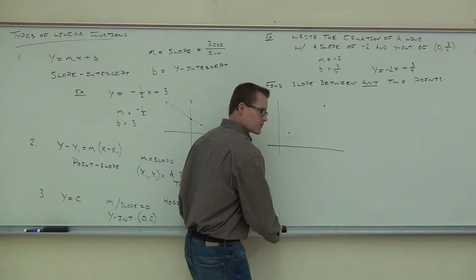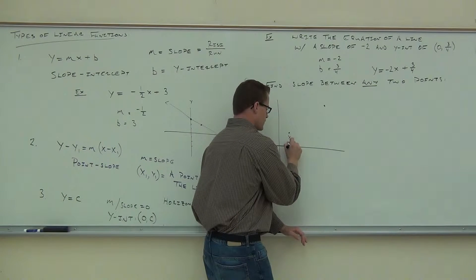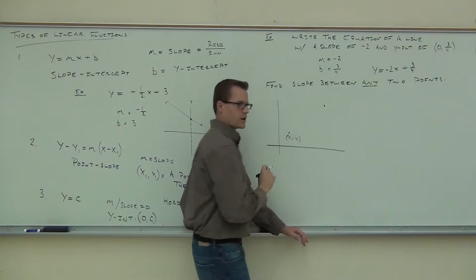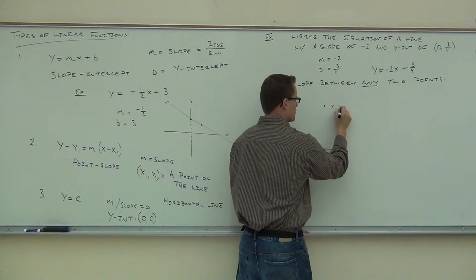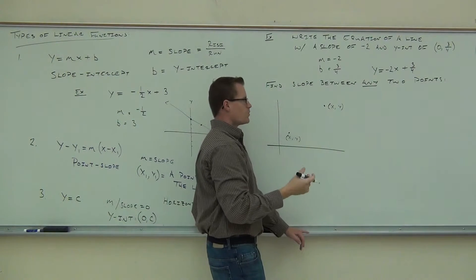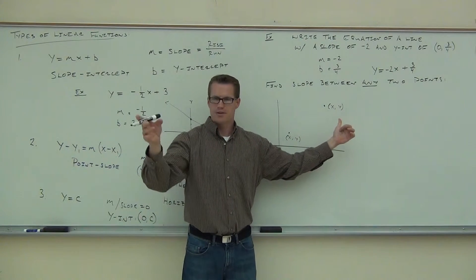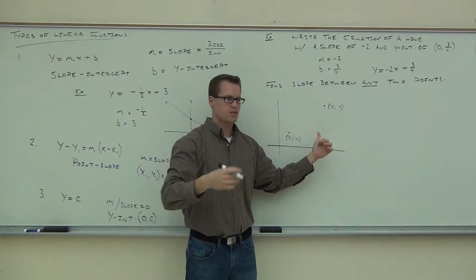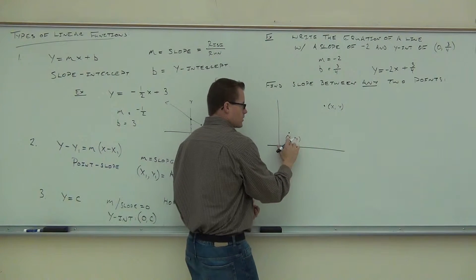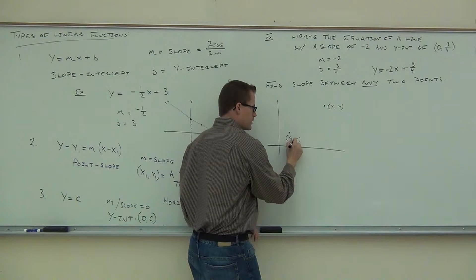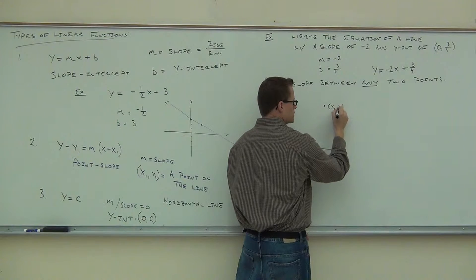Every single point you've ever seen has this form — it looks like xy. This point will also look like xy, but we need some way to tell the difference between the two points because right now they look identical. So we're going to use a subscript, just like we have over here: x1, y1 for the first point, and x2, y2 for the second point.